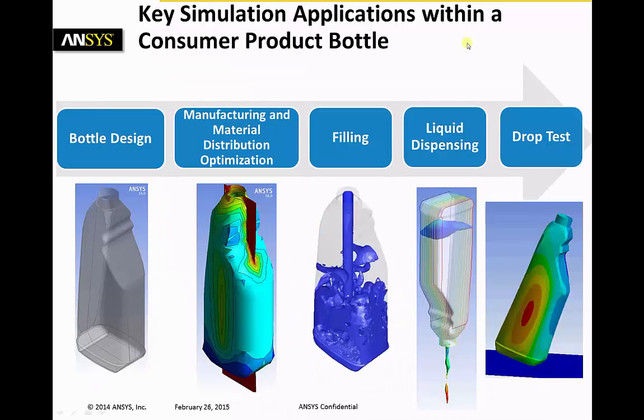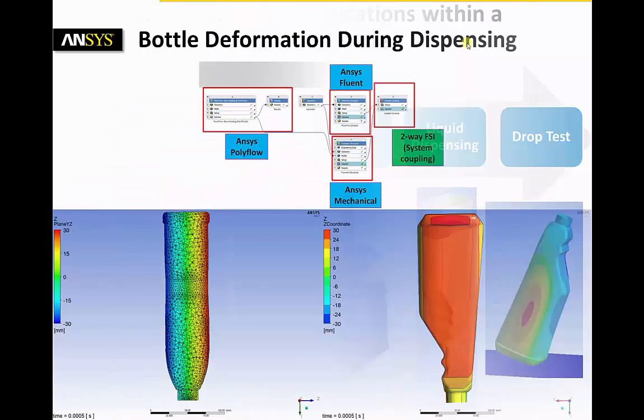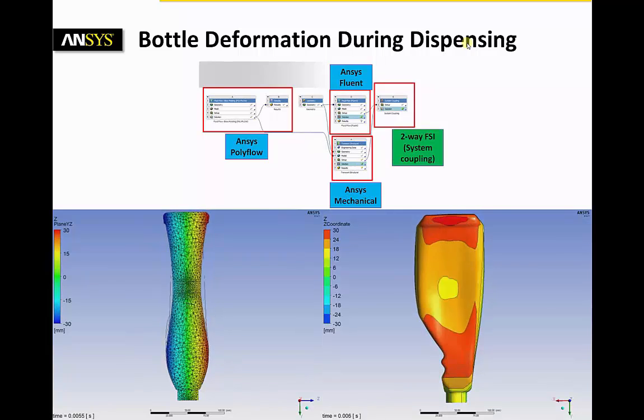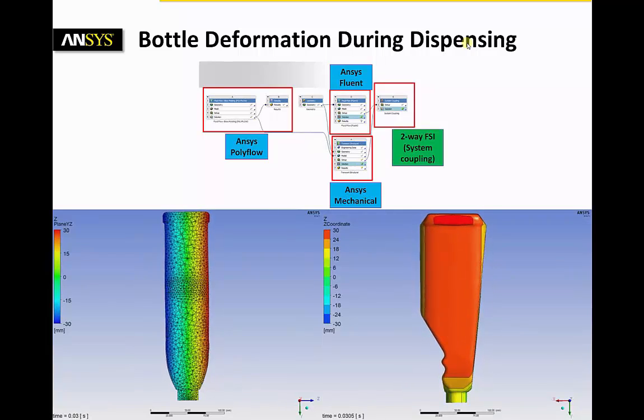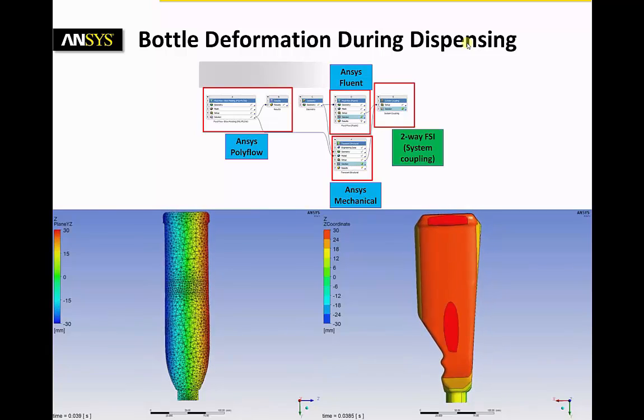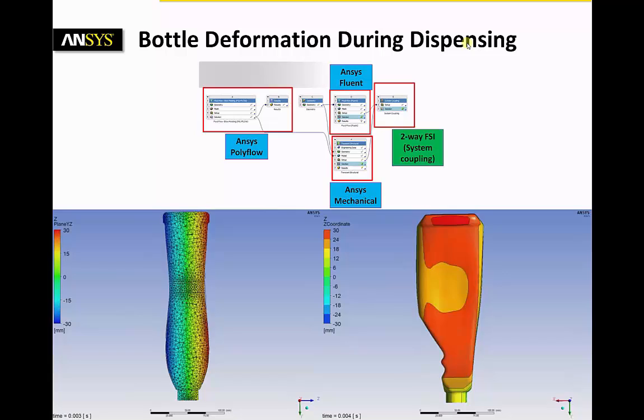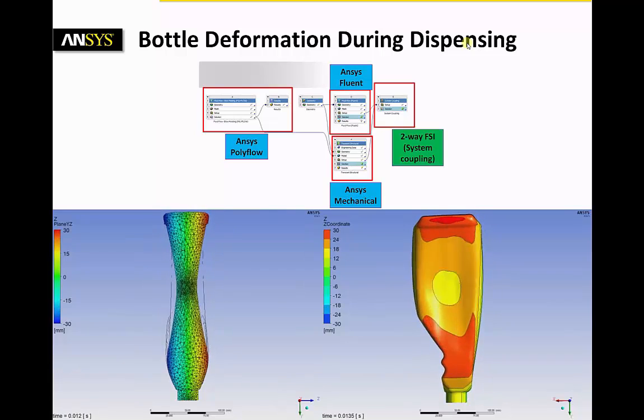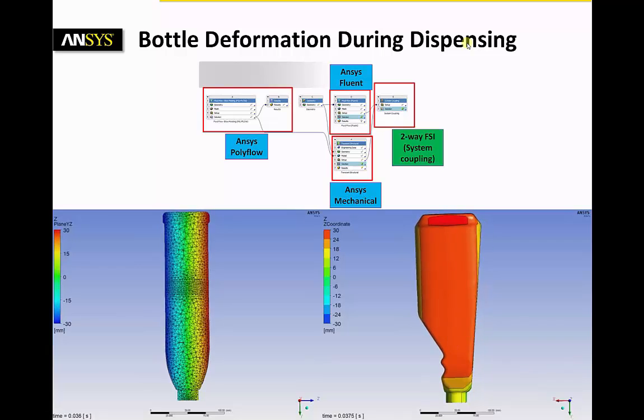The next step is now looking at the dispensing behavior of the bottle during its use. The dispensing process is truly multi-physics. During the squeezing of the bottle, the consumer has to overcome certain resistance by the bottle itself as well as the liquid resistance within the bottle. Moreover, the thickness variation of the bottle due to the blow molding process also affects the structural behavior.